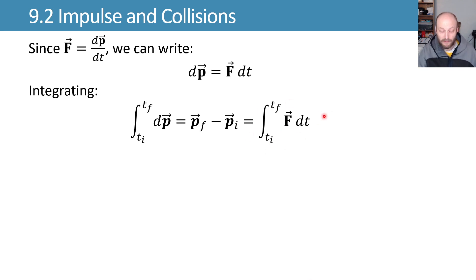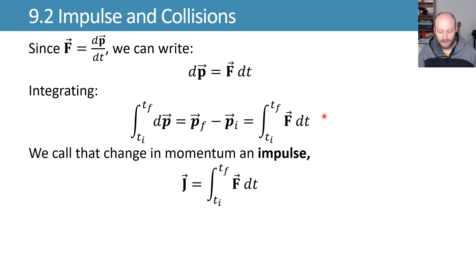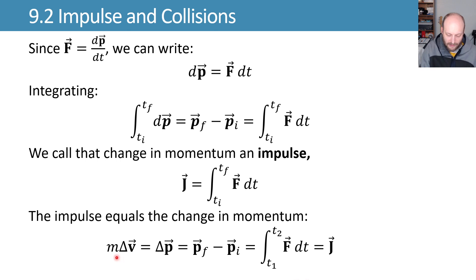This change in momentum we call an impulse, and we define that impulse as J is equal to the integral over that time interval of f dt. What that lets us do is it lets us talk about a change in momentum based on this impulse. So the impulse is equal to this change in momentum, or m delta v, which is our change in momentum assuming a constant mass, will be equal to that impulsive force.